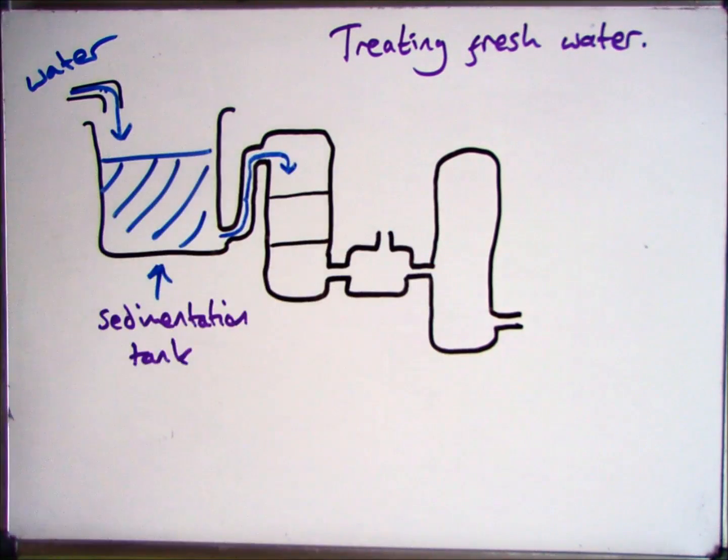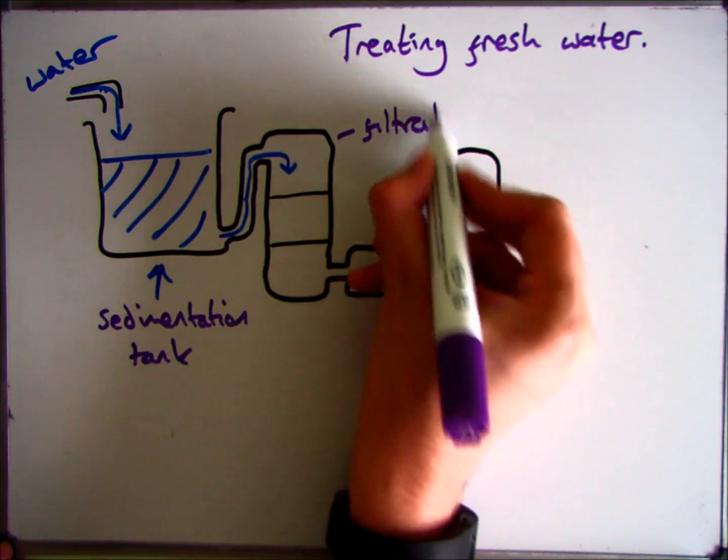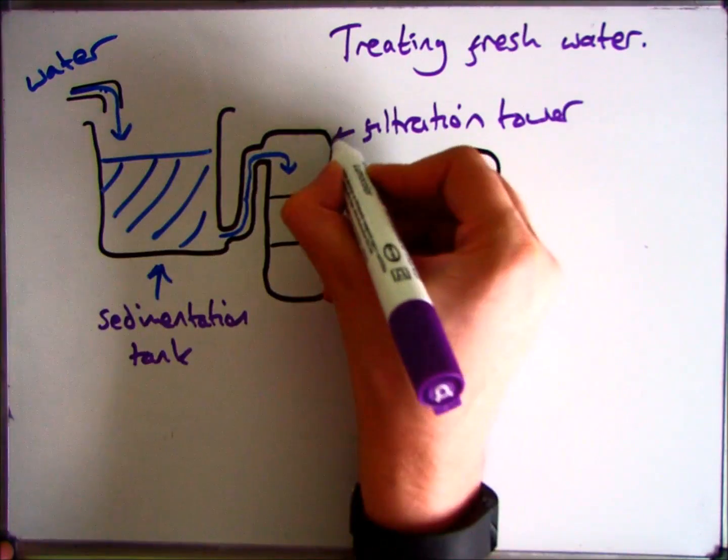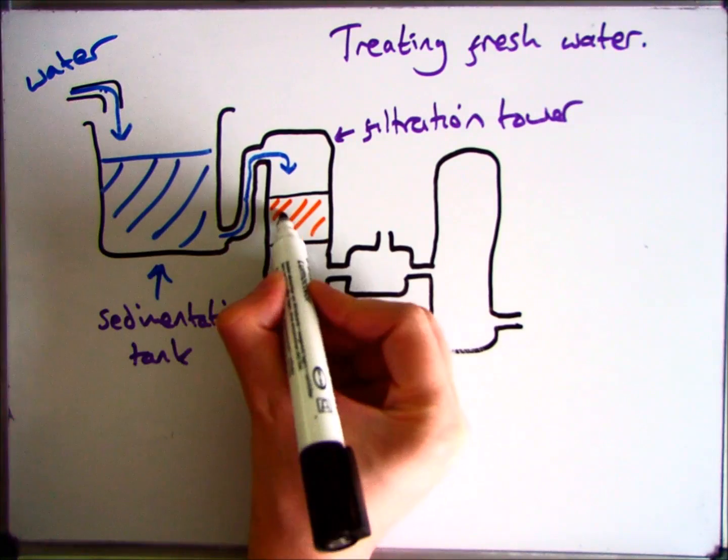The rest of the water goes into the filtration tower. In here we have sand and gravel, and as normal filtration works, it helps to get rid of all the bits inside the water.